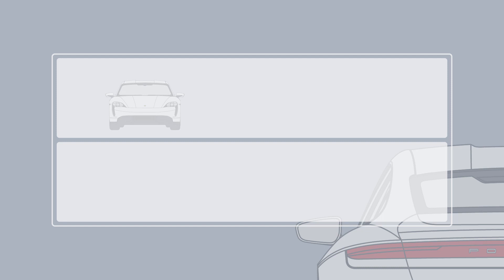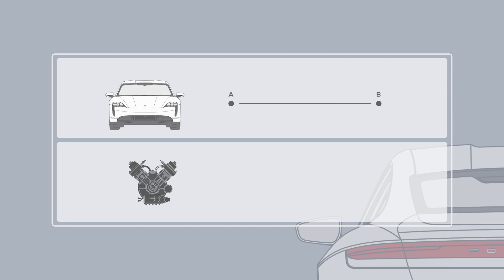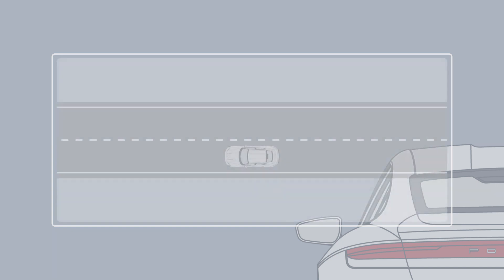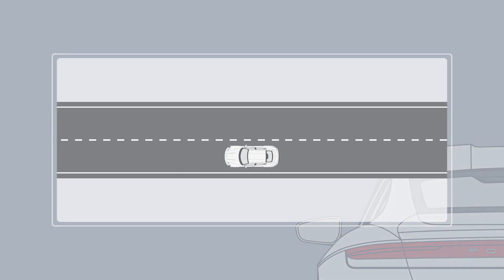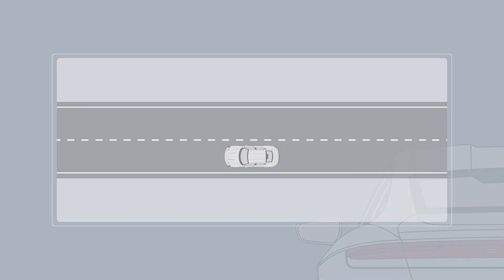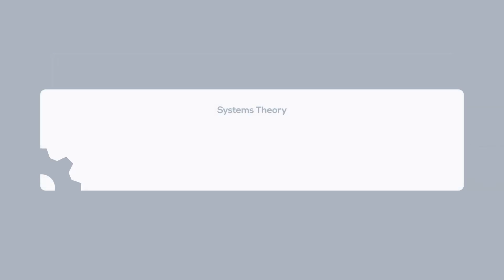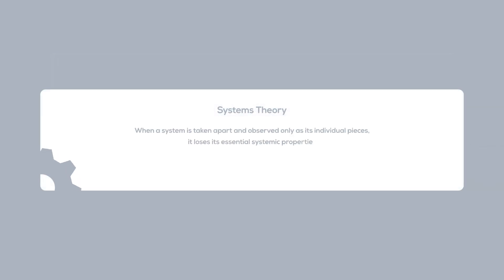While a car can move from A to B, the engine itself cannot. Neither can the steering wheel nor the transmission — but the car can. The car as a whole has properties that none of its parts have. Thus, when a system is taken apart and observed only as its individual pieces, it loses its essential systemic properties.